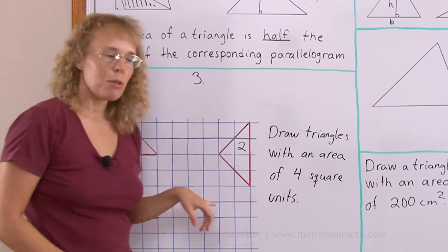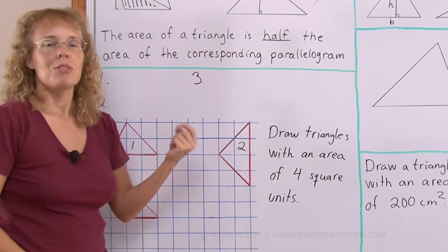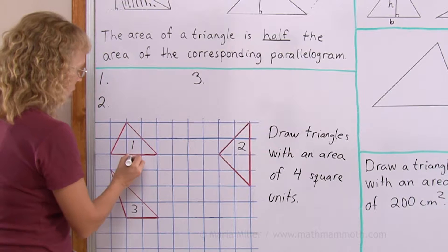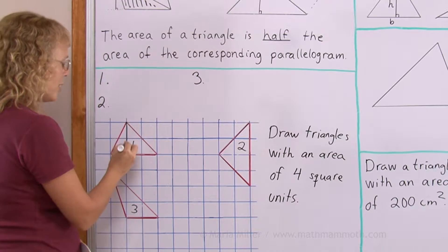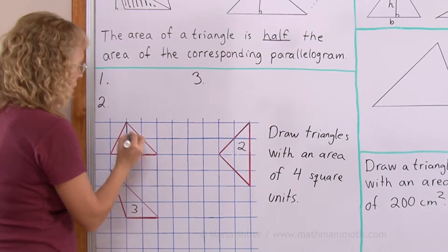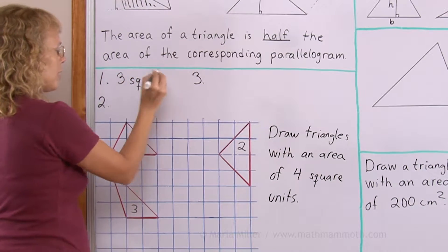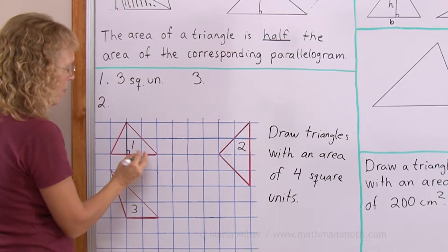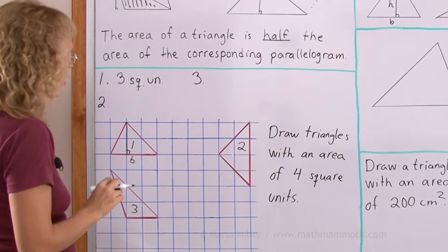Let's now solve some problems and find the area of these triangles. We will use the formula: base times altitude divided by two, or half of base times altitude. In this triangle, the base is three units and the altitude, perpendicular from the top down, is two units. Three times two equals six — take half of that — three square units. Does that make sense? You can count the squares: there's one whole square here, these two seem to make another, and these two together make a third square unit. So yes, it makes sense.